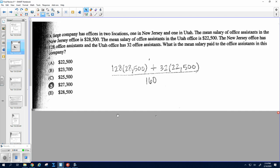This is actually a good old-fashioned pre-algebra problem. I don't feel like we've actually done a lot of these recently, but there's 128 people who have this salary, 28,500, and 32 people who have this salary, 22,500, divided by the total people, so this plus this, and you should get D.